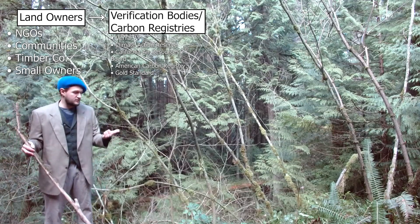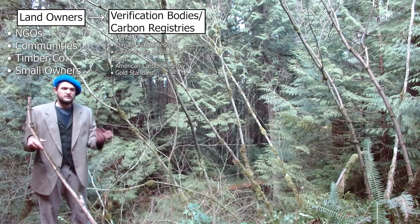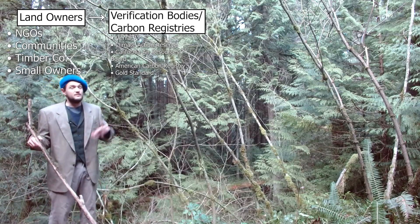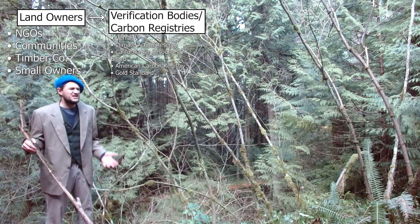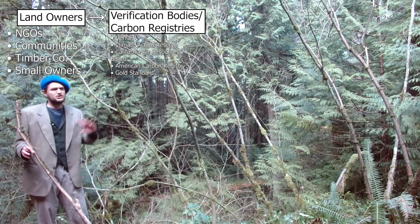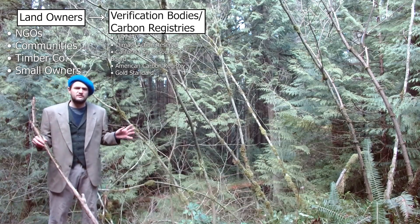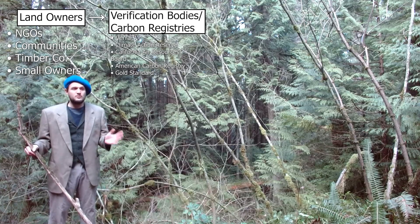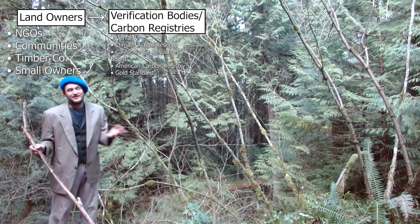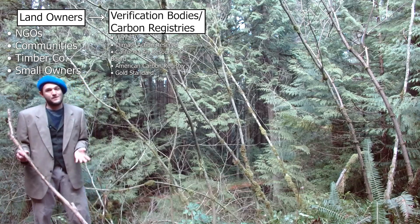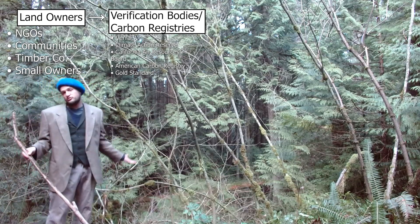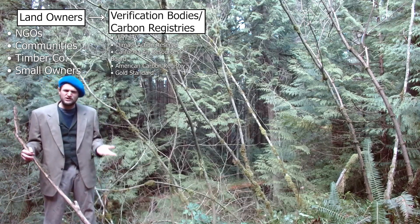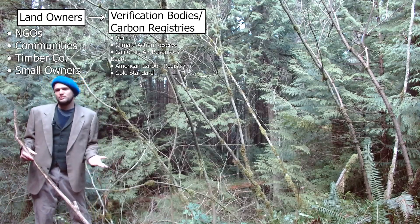Climate Action Reserve is another one. The California Air Resources Board is a big verification body, but it actually serves the compliance market. And then the American Carbon Registry is a big one in the United States. Finally, there's Gold Standard, who occasionally does some forest carbon but mostly does other types of carbon projects. The important thing to note is that not all of these carbon bodies are equal. I've rarely seen a good carbon project come out of the American Carbon Registry. Verra projects are 50-50, but Climate Action Reserve and California Air Resource Board projects are pretty good — I've rarely had an issue with any of them.